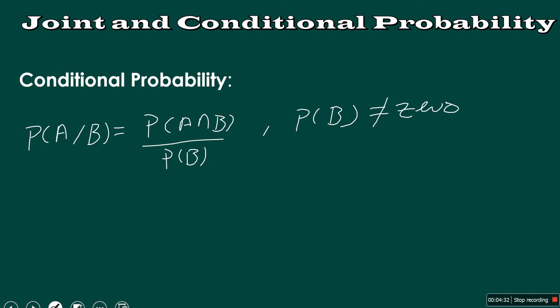It means A depends on B in one way or another, and this is the formula to get the probability of A given B — how much A is dependent on B. We can understand this more if we know that probability of S (the sample space) given A, which is a subset of the sample space, equals probability of A.